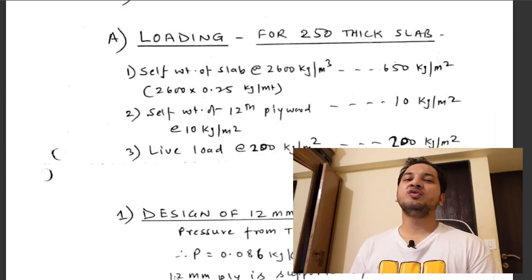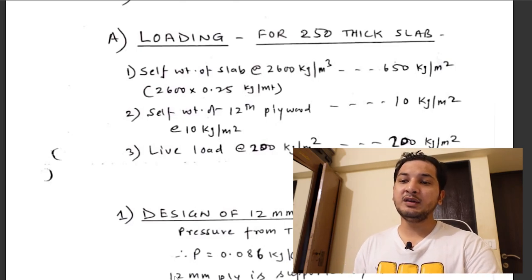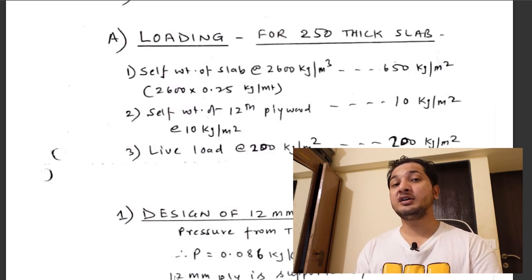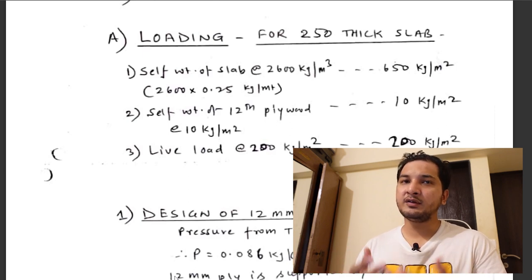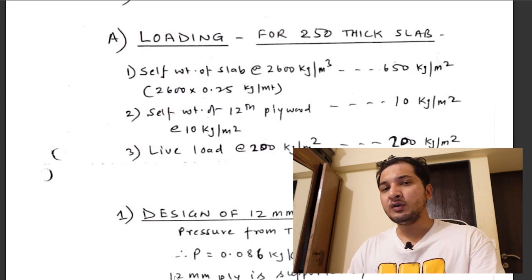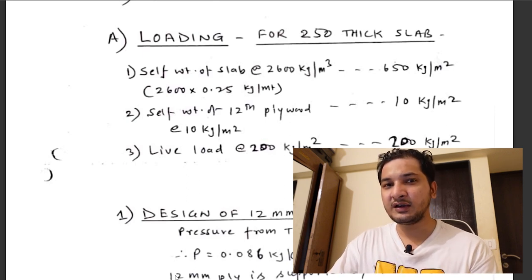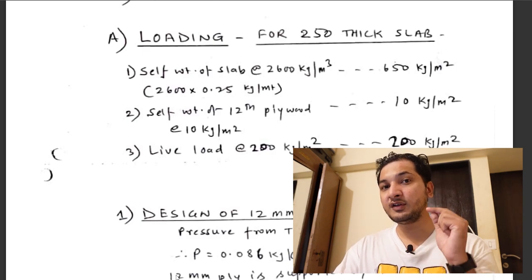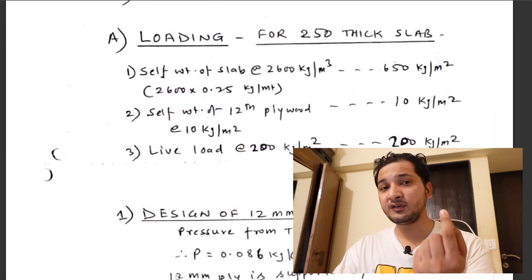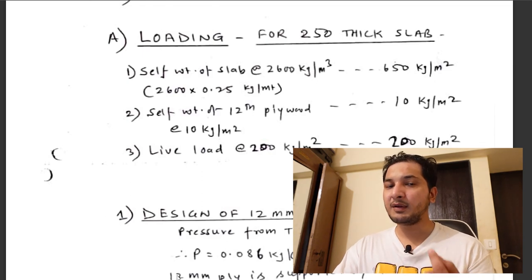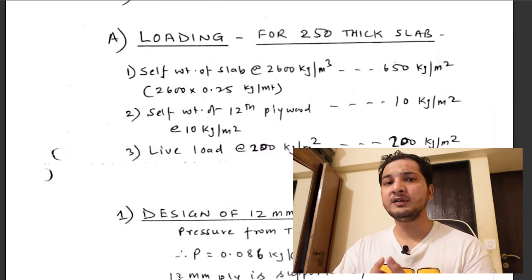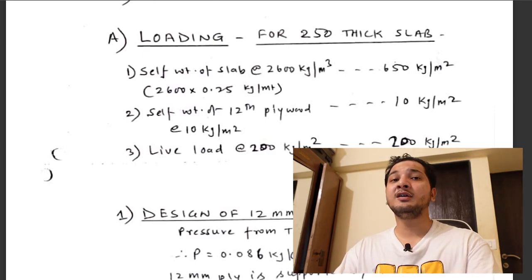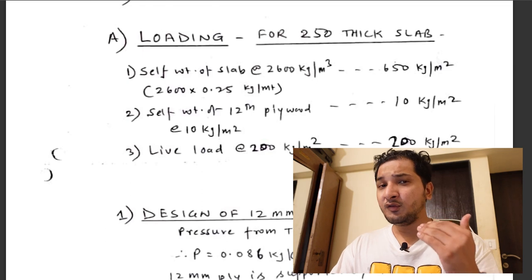Hello friends and welcome once again to my channel. In this video we will be looking at the shuttering design for a conventional slab, which is also applicable for conventional beams as well, because we cast slab and beam together. We will study the important calculations for designing each member of the shuttering system. The first element is the plywood, then the cup lock system, then the cross members, and the primary members like the ISMC or channel sections used for supporting the plywood.